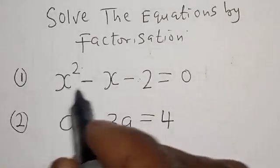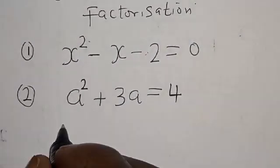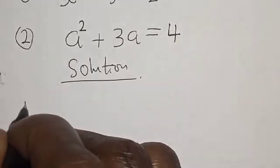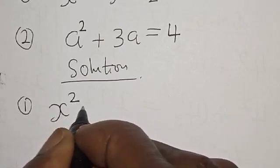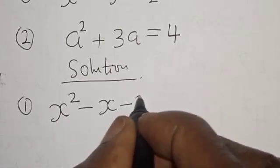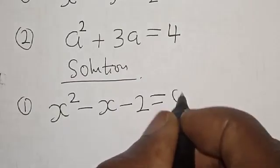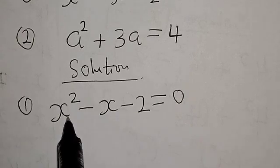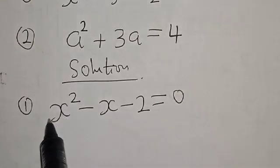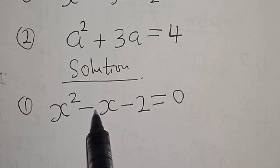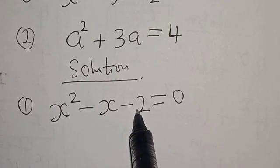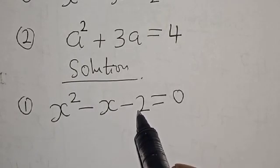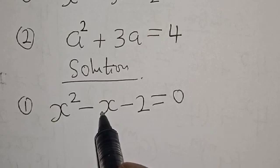We're going to start with the first equation. We have x squared minus x minus 2 is equal to zero. In the factorization method, the coefficient of x squared is 1, the coefficient of x is minus 1, and the constant is minus 2. We look for two numbers so that the product gives minus 2 and the sum gives minus 1.